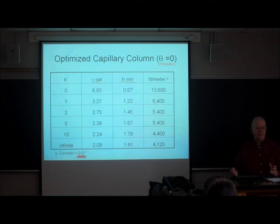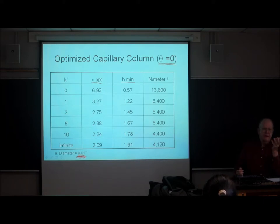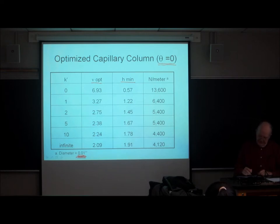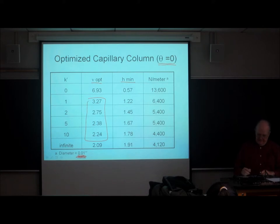The smaller the radius of the tube, the more plates per unit length, and the faster the absolute velocity will be. The reduced velocity at the optimum is somewhere between two and three, so it's pretty easy to estimate what your optimum flow rate should be — it corresponds to a reduced velocity of something between two and three.